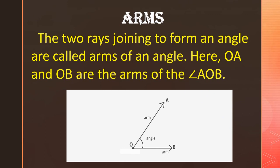First we will see arms. The two rays joining to form an angle are called the arms of an angle. Here you can see the two rays. OA and OB are the arms of angle AOB.